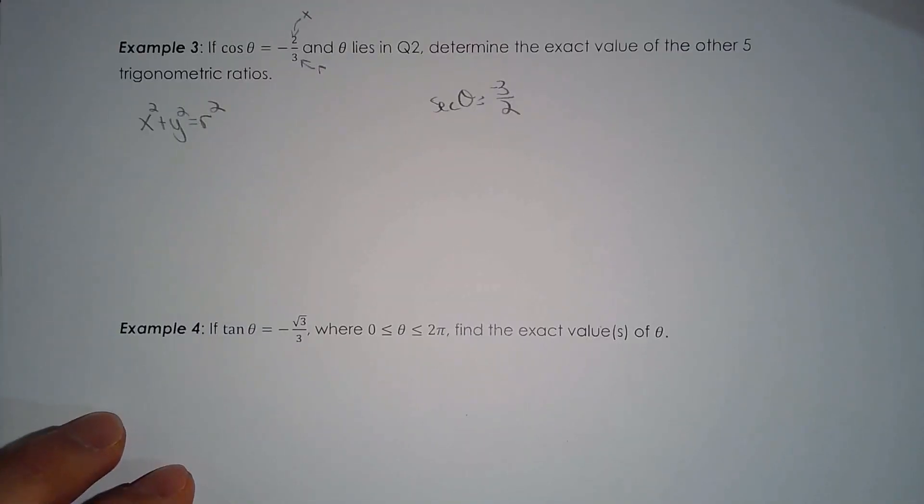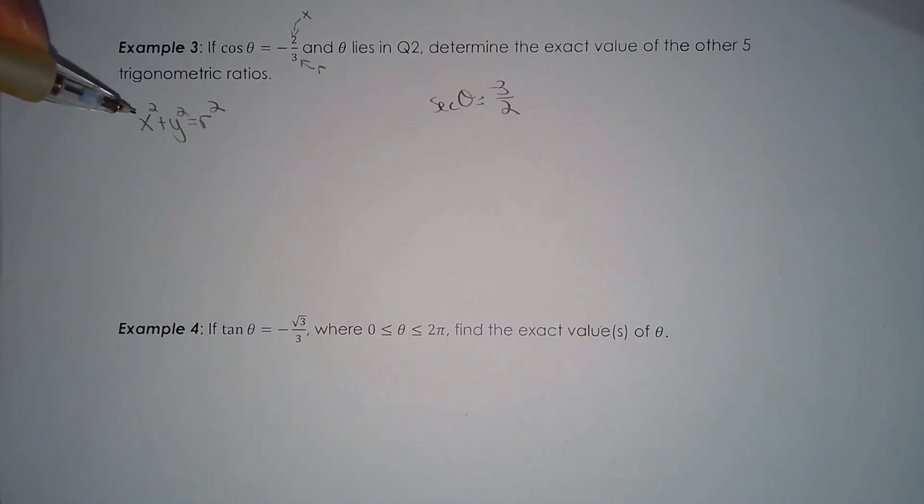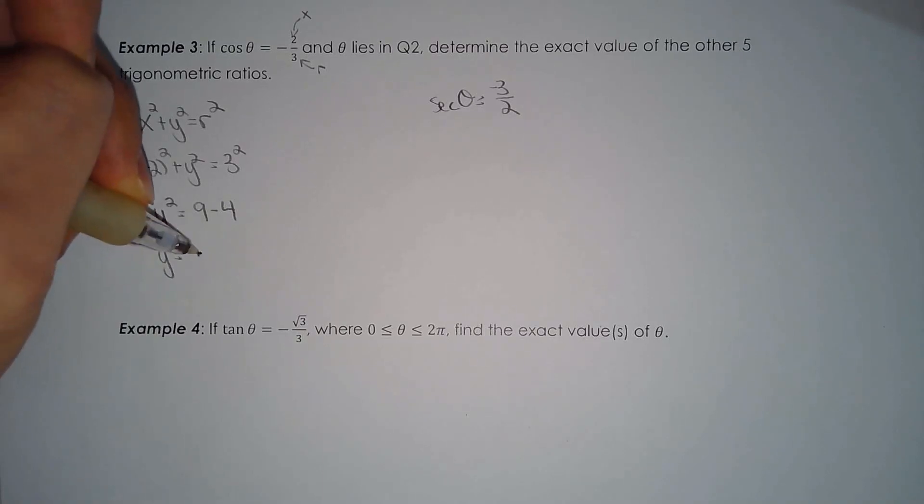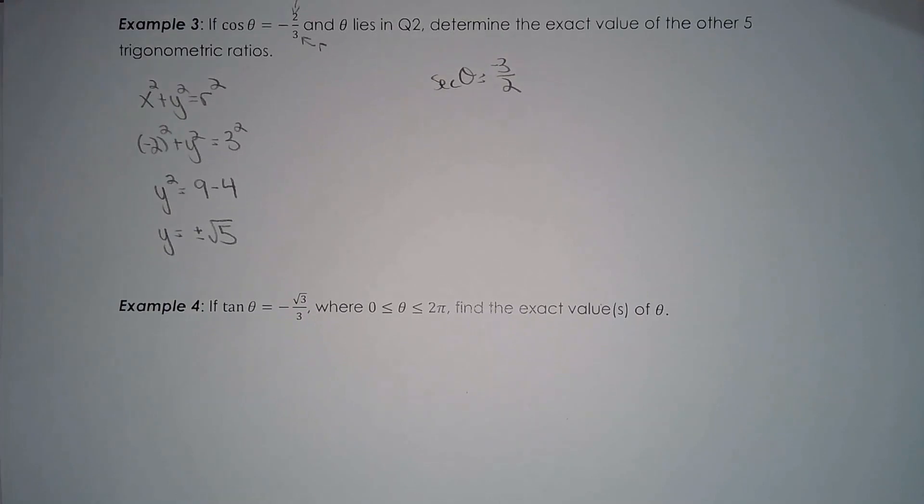If I know x and r, I can solve for y. So x is negative 2. If you do the math, you get y is equal to plus root 5 or minus root 5.